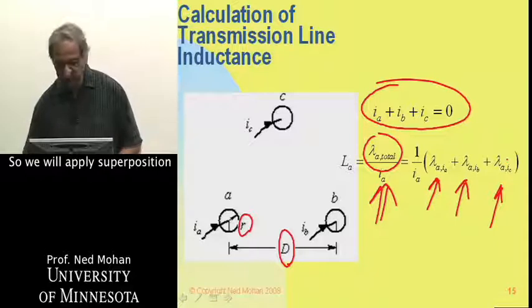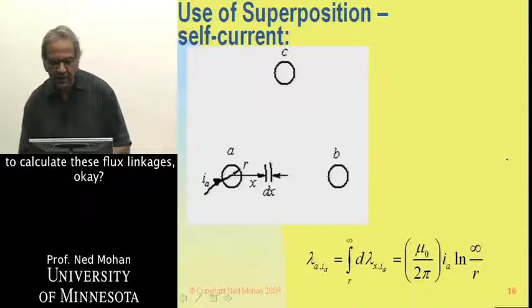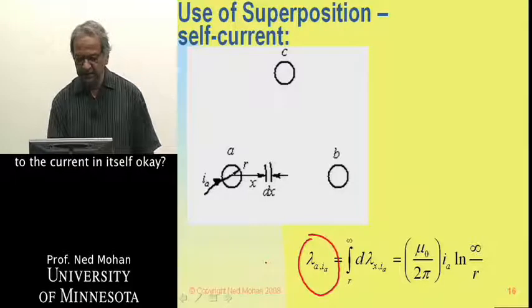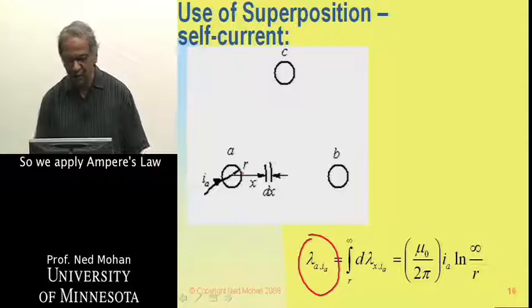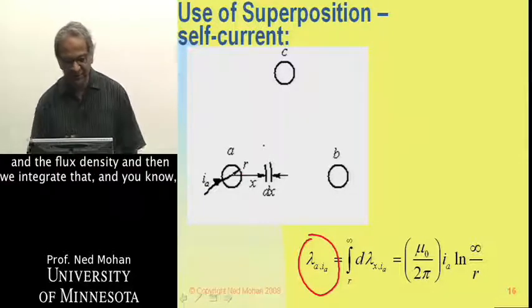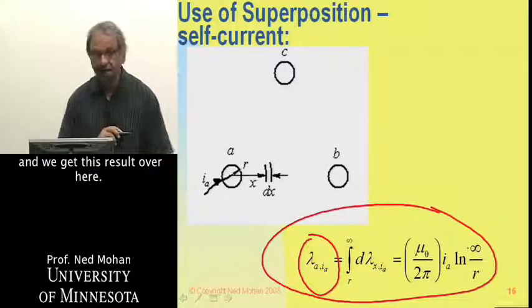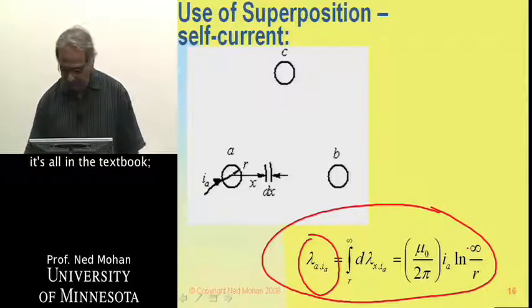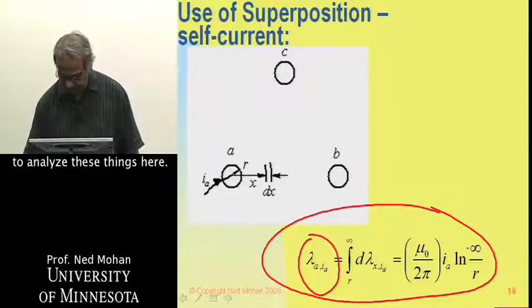So we will apply superposition to calculate these flux linkages. First, let's obtain lambda a due to the current in itself. We apply Ampere's law, and we can find the field intensity here and the flux density, and then we integrate that, and we have to go all the way to infinity, and we get this result over here. I'll not go through it in detail. It's all in the textbook. I just want to establish a framework here to analyze these things.